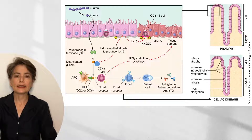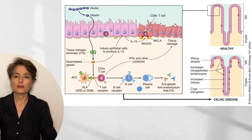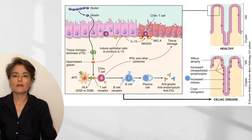The deamidated gliadin, with its increased negative charge, binds avidly to HLA-DQ2 or DQ8 on antigen-presenting cells. These present to CD4-positive T-cells, which release interferon gamma and other cytokines causing tissue damage, and can further differentiate to form plasma cells producing autoantibodies — anti-endomysium and anti-TTG. Anti-gliadin antibodies are also produced, though not strictly autoantibodies.